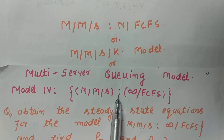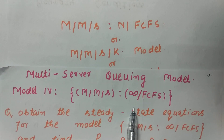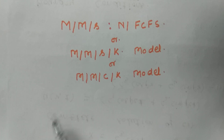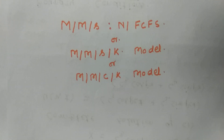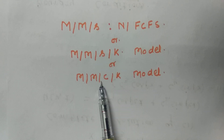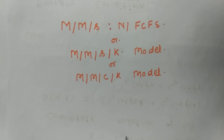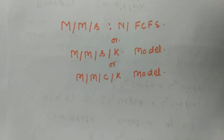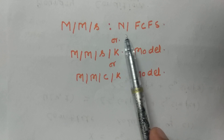In the previous model we had assumed that there is an infinite queue, or unlimited waiting area for customers. Now in this model we will assume that there is a finite waiting area for the customer. The finite capacity of the system is denoted by N or K, and the multiple servers are denoted by S or C. This model is similar to Model 4 — the only change is the finite waiting area for customers.